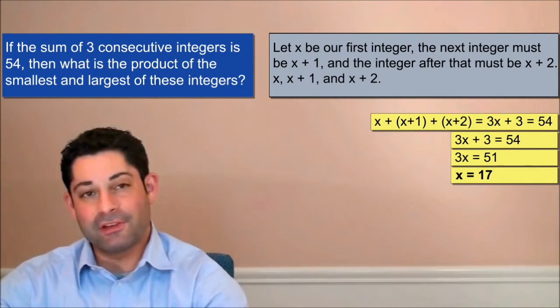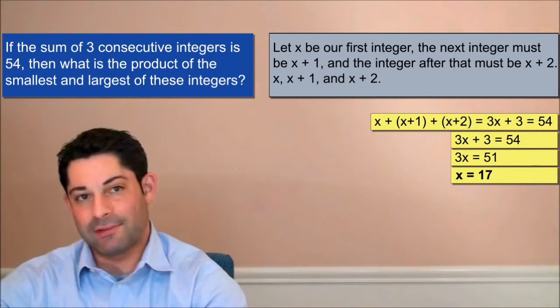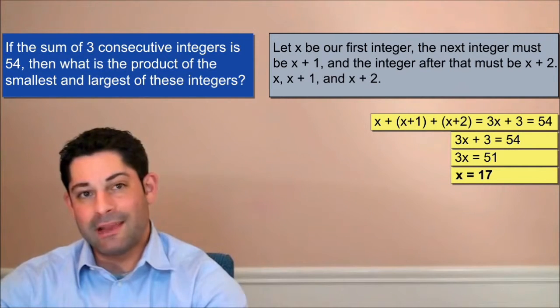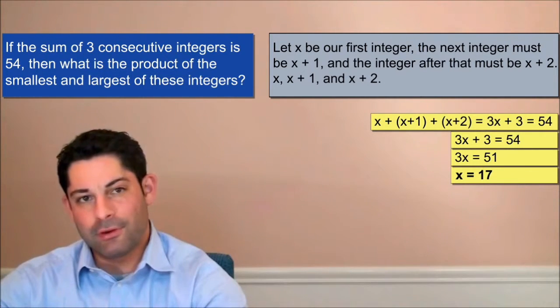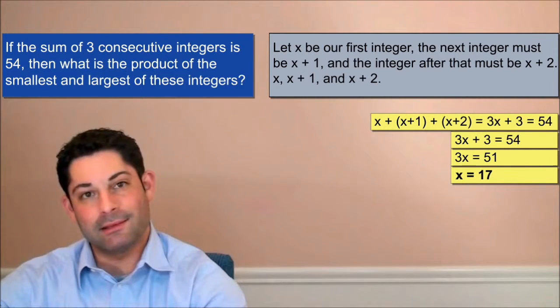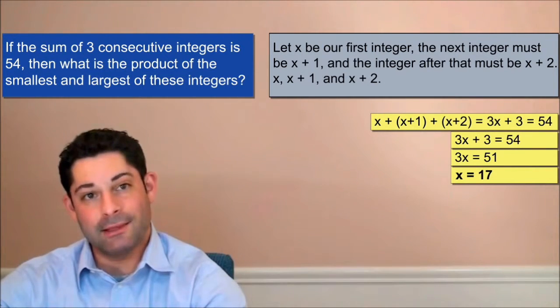So now we see that our first integer x is actually equal to 17, which means that our next consecutive integer must be 18, and our third consecutive integer must be 19. So our three consecutive integers are 17, 18, and 19.